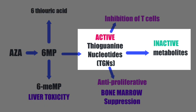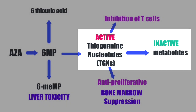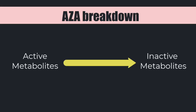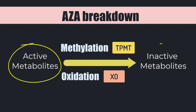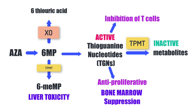Thankfully, we do have other pathways which break down these active metabolites into inactive metabolites. And if we zoom out a little, we can see that these metabolic pathways which limit the toxicity of azathioprine can be divided into two main mechanisms: methylation and oxidation. Methylation is performed by TPMT, also known as thiopurine S-methyltransferase, whilst oxidation is performed by xanthine oxidase. So whenever we prescribe azathioprine, we are relying on these enzymes to turn active metabolites into inactive metabolites. But these pathways can be subject to enzyme deficiencies and drug interactions, which make azathioprine a potentially dangerous medication in certain circumstances.